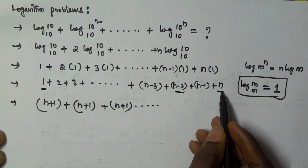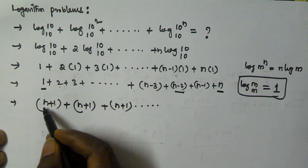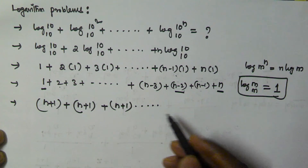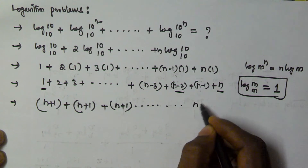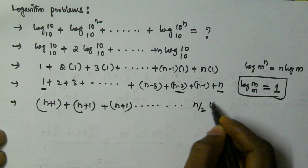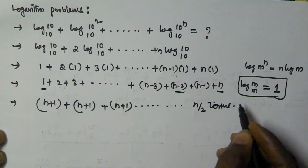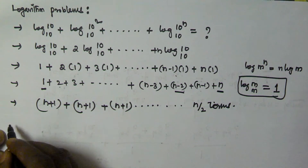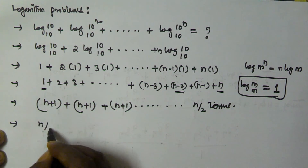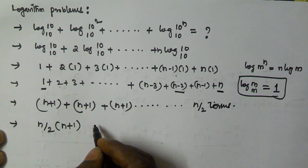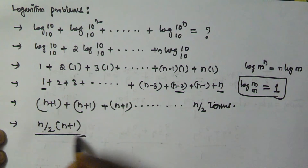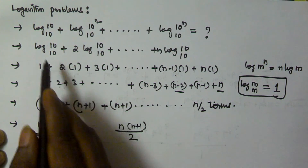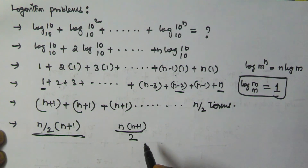Here we are combining two values to get one value. This series contains n terms, so after pairing it contains n by 2 terms. Therefore this becomes n plus 1 added n by 2 times, which equals n by 2 into n plus 1, or n into n plus 1 by 2. So the value of this expression is n(n+1)/2.